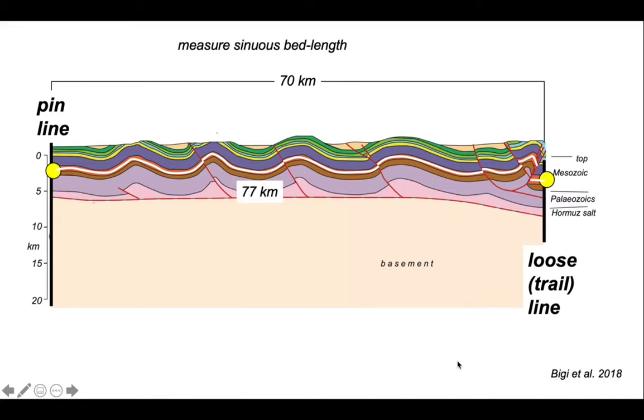It has a present day length, which is simply the straight line distance measured between pin and loose line of 70 kilometres. The sinuous length of that bed, measured along the length of the white line, is 77 kilometres.